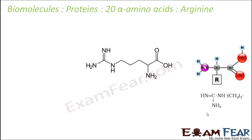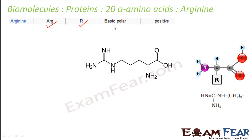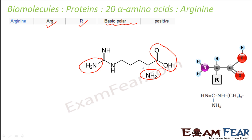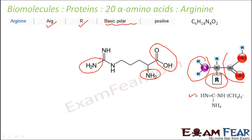Let us look at the next amino acid, that is arginine. For arginine, the three-letter short form is ARG and the one-letter form is R. It is basic, polar, and positive — it has more amine groups than carboxylic groups, making it basic in nature. This is how the structure looks like, with the amine group, carboxylic group, and a complex alkyl group. Compared to alanine whose alkyl group was simply CH3, arginine's alkyl group is quite complex.